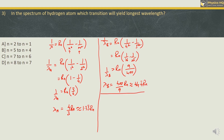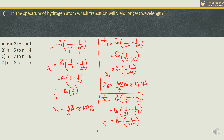Let us check option C, transition 7→6. 1/λC = Rh × (1/6² − 1/7²) = Rh × (1/36 − 1/49). Cross-multiplying gives: 49 − 36 = 13 in the numerator and 49 × 36 = 1764 in the denominator. So 1/λC = 13Rh/1764.